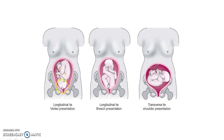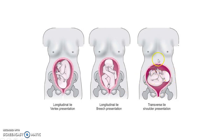This picture shows longitudinal lie — you can see the long axis of the fetus is parallel to the long axis of the maternal spine. This is again longitudinal lie but the presentation is different, which we will see in subsequent slides. This is transverse lie; you can notice that the fetus and the maternal spine are perpendicular to each other. The lie can be oblique when the fetus is at an angle of 45 degrees to the maternal spine.